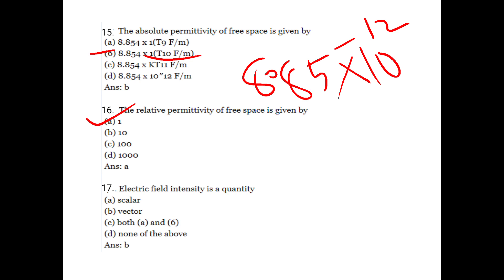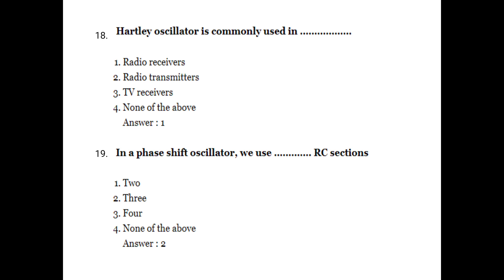Electric field intensity is a vector quantity. In electronics, the Hartley oscillator is commonly used in radio receivers. In a phase shift oscillator, we use three RC sections.